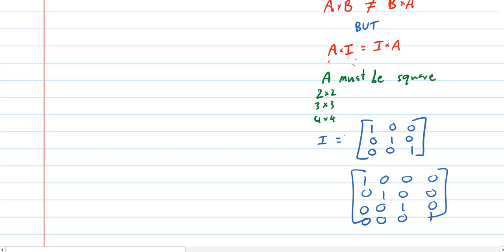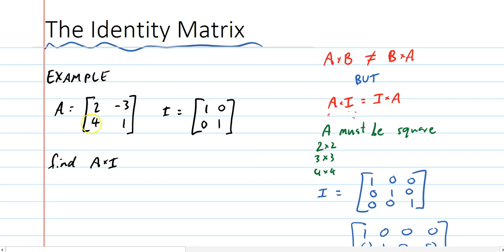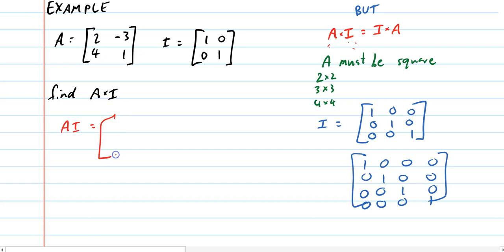So that's what these identity matrices look like. For example, if A was 2, negative 3, 4, 1, and I was 1, 0, 0, 1, find A times I. Well, I can tell you straight away, this is the identity matrix. This is A. So my answer, well, actually, let's find out. Let's see what happens. Alright, so it's going to be a 2 by 2 matrix. And it's going to be 2 times 1 plus negative 3 times 0.